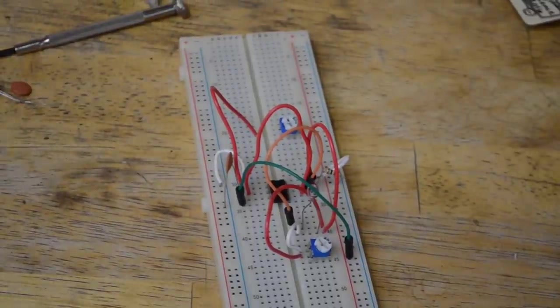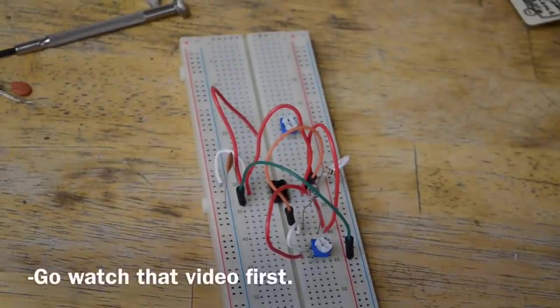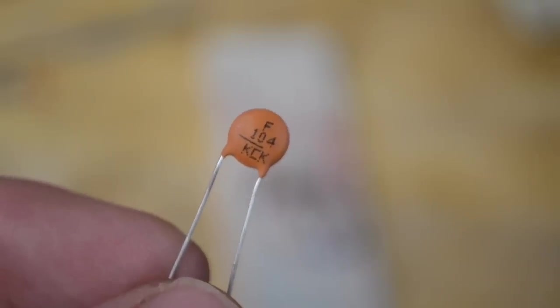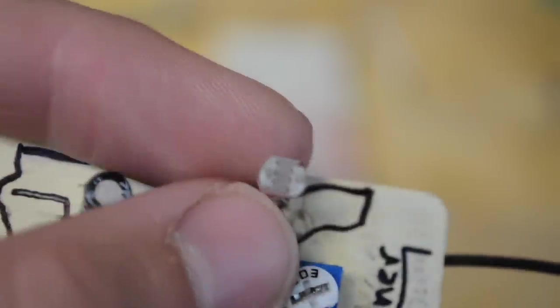For this circuit, we're going to be using one very similar to the one we last used. As you can see, the changes are as follows: this 100 nanofarad capacitor and a photoresistor just like this.